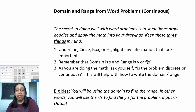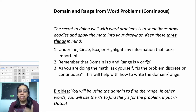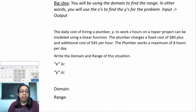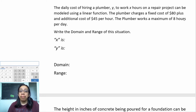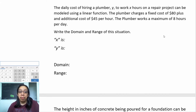The big idea is that we want to use the domain given to us to find the range — using the inputs to find the outputs. Let's look at a first example. The daily cost of hiring a plumber Y to work X hours on a repair project can be modeled using a linear function. The plumber charges a fixed cost of $80 plus an additional cost of $45 per hour. The plumber works a maximum of eight hours per day. Write the domain and range of this situation.